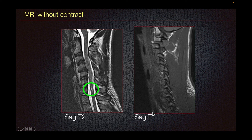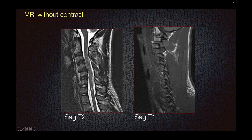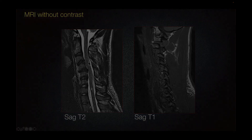On our sagittal T1 imaging, we can again see the perched facet of C4 over C5 and the displaced fracture, as seen here. We also look for possible epidural hematoma or any kind of abnormal cord signal.